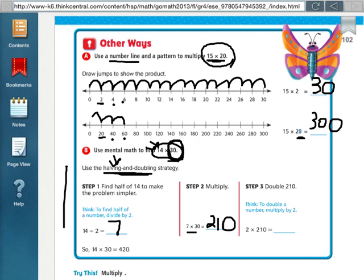So I've done the halving part, cut my first number in half and multiplied. Now I have to take my answer and double it. So 210 times 2 is 420. So the complete answer for 14 times 30 is 420.